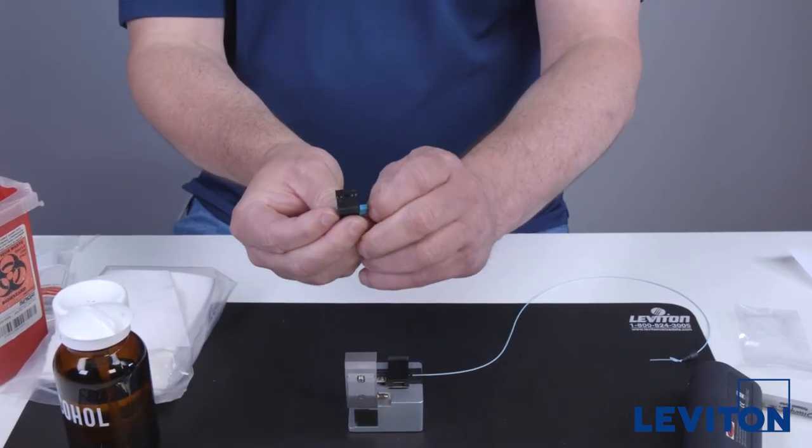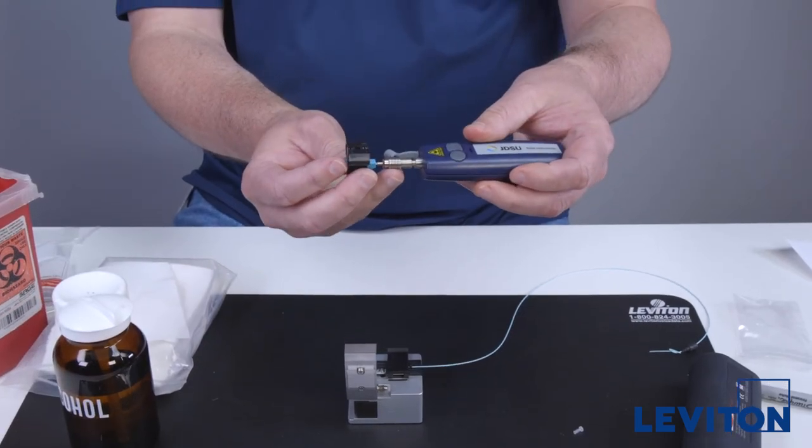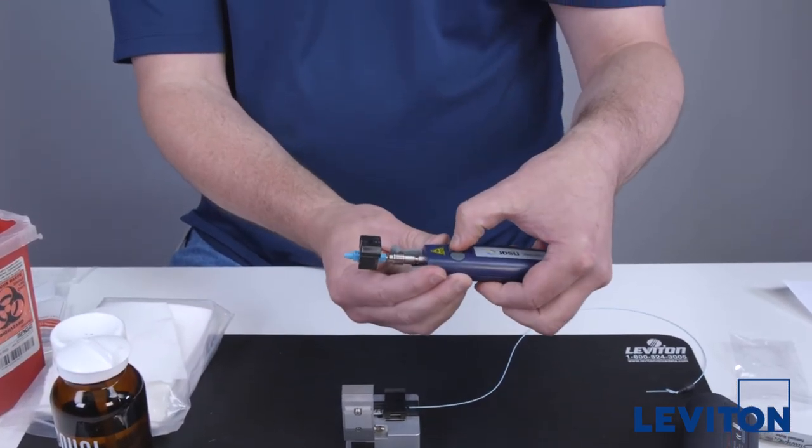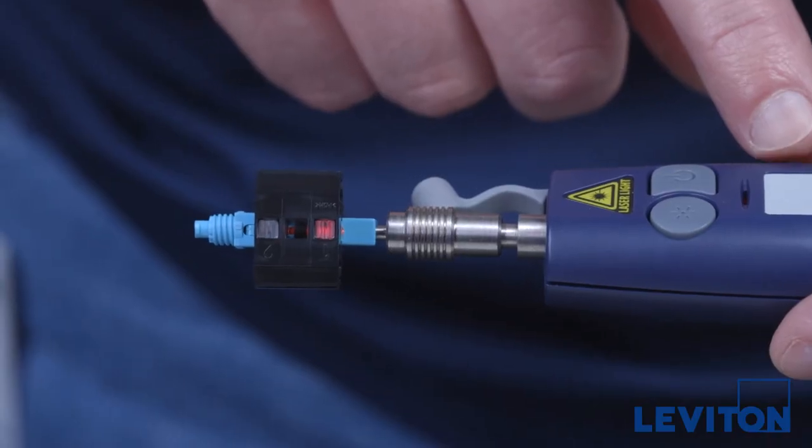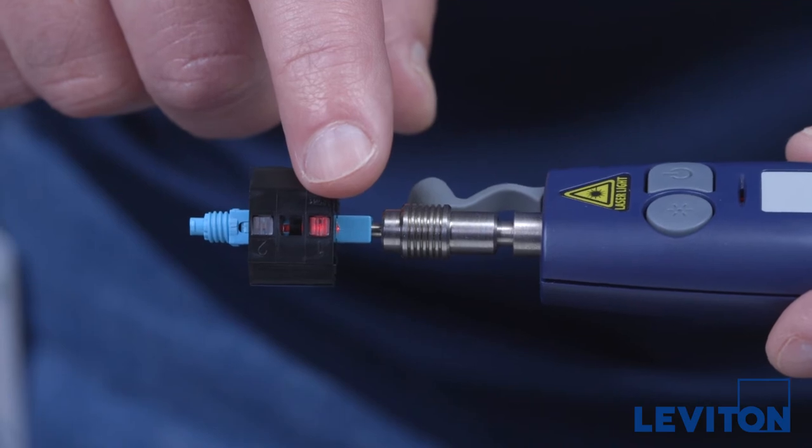Remove the protective cap from the connector. Install the visual fault locator onto the ceramic ferrule at the end of the connector and turn the VFL on. Since the cams are open, you can see light traveling down the length of the connector and escaping through window one.